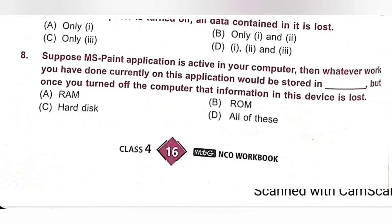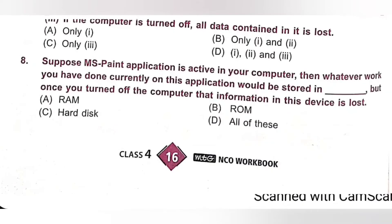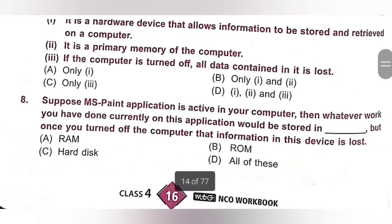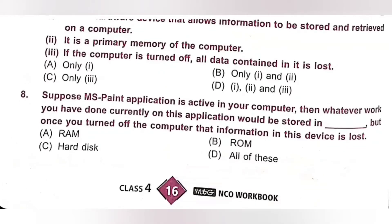Question 8: Suppose MS Paint application is active in your computer. Whatever work you have done currently on this application would be stored in dash — but once you turn off the computer, that information in this device is lost. Options: A. RAM, B. ROM, C. Hard disk, D. All of these. As discussed previously, if the computer is turned off, all data is lost — it is RAM memory. Option A, RAM, is the correct answer because RAM is a volatile memory.